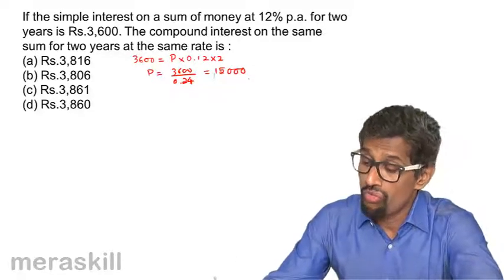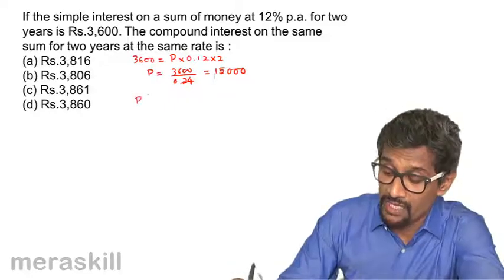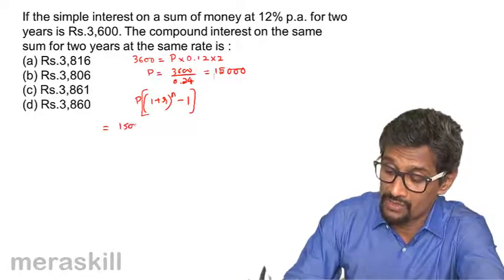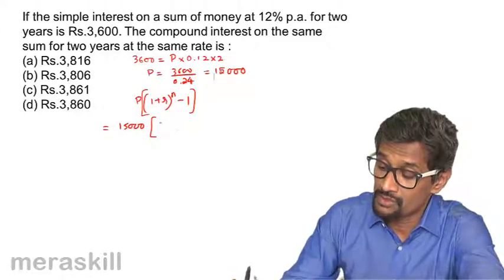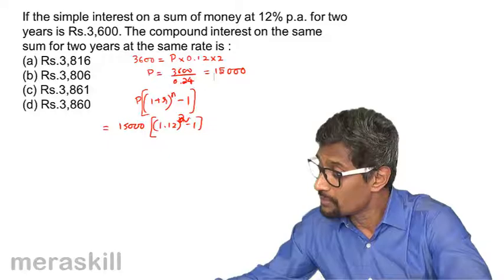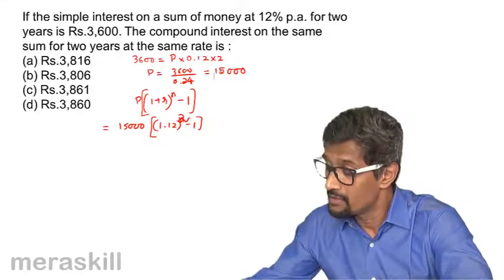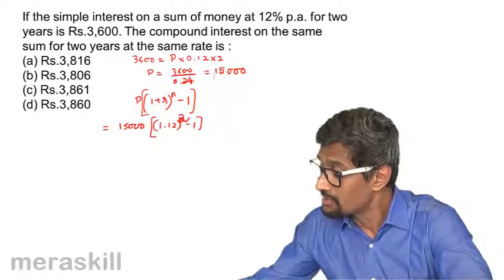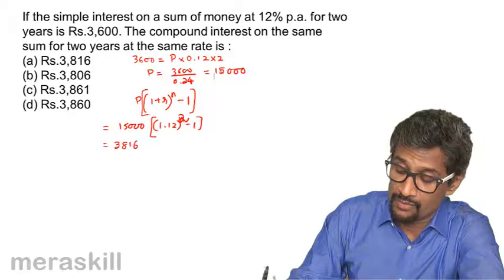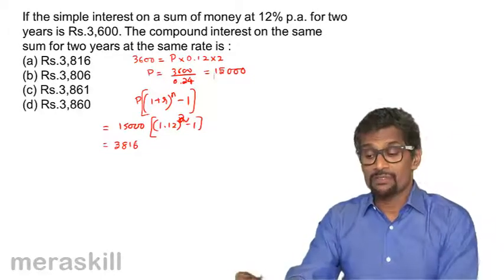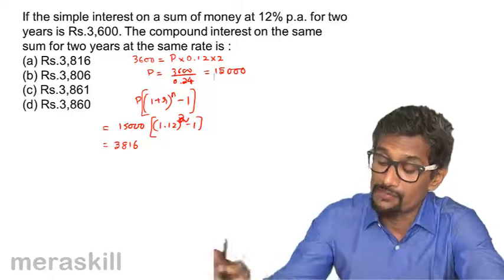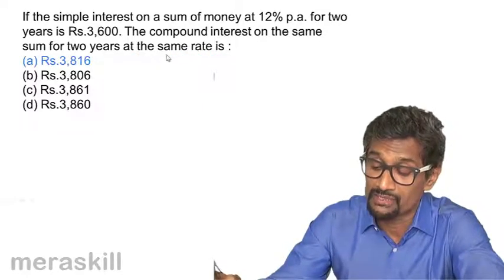Now the compound interest on the same sum is P × (1 + R)^N − 1, which is 15,000 × (1.12² − 1). So 1.12 × 1.12 minus 1, multiplied by 15,000, gives rupees 3816. The first set of information was used to find P, and subsequently we find the compound interest for the same principal and same rate of interest.